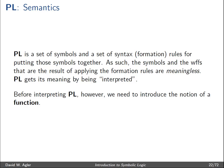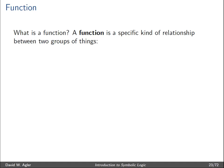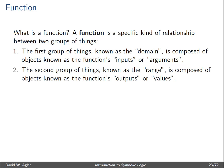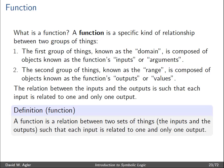Before talking about the semantics of the language of propositional logic, it's helpful to introduce the general notion of a function, and I'll do that in a somewhat casual way. A function is a specific kind of relationship between two types or groups of things. The first group is known as the function's domain, composed of objects known as the function's inputs or arguments. The second group is known as the range, composed of objects known as the function's outputs or values.